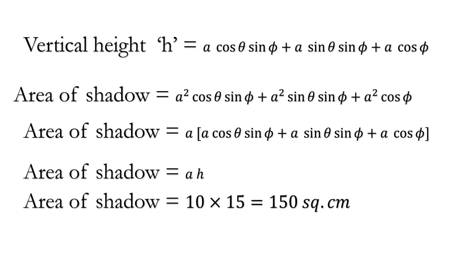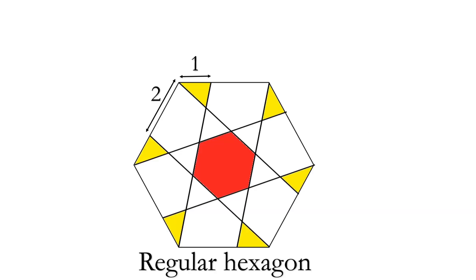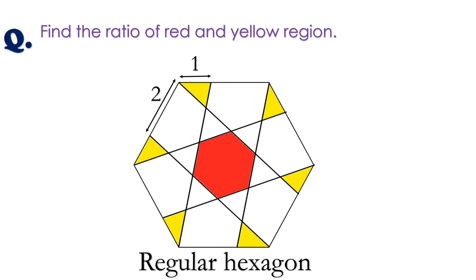Let's move toward another question. Find the ratio of the red and yellow regions. Here we have a regular hexagon and some measurements are given — find the ratio of the red and yellow region. Try this question and comment your solution. If you have a question like this, send it to the Gmail given in the description box. Don't forget to like and share our video, and for more such videos subscribe to our channel Brain Exploders. Thanks for watching!